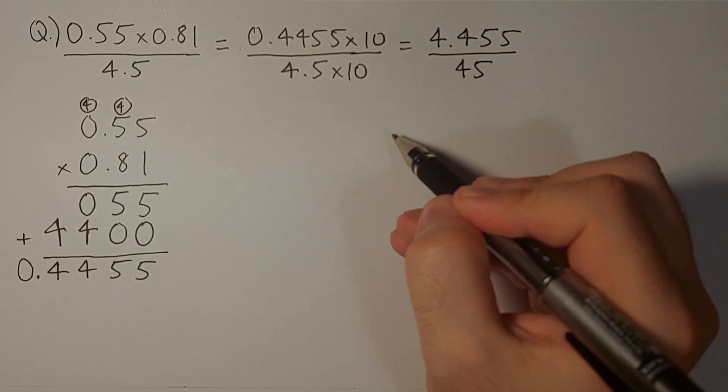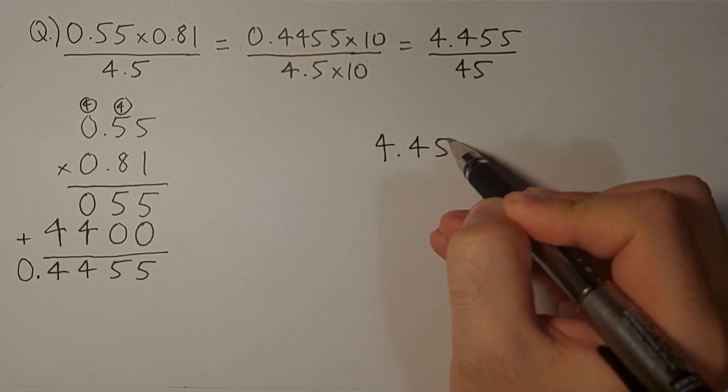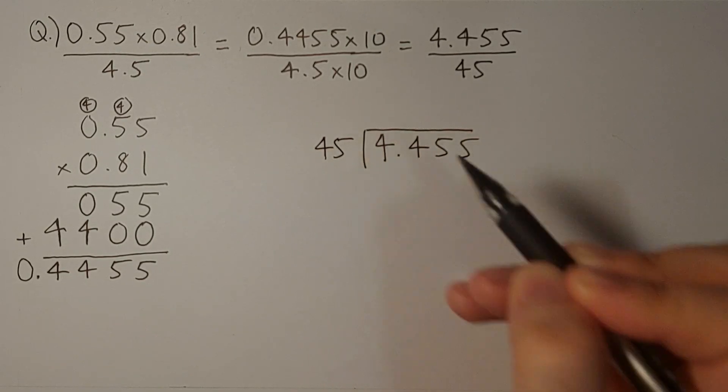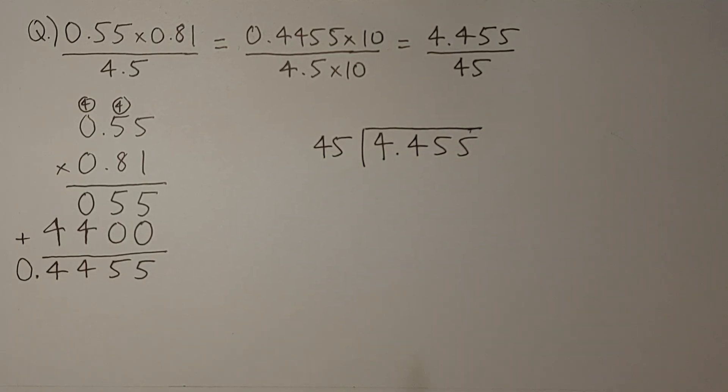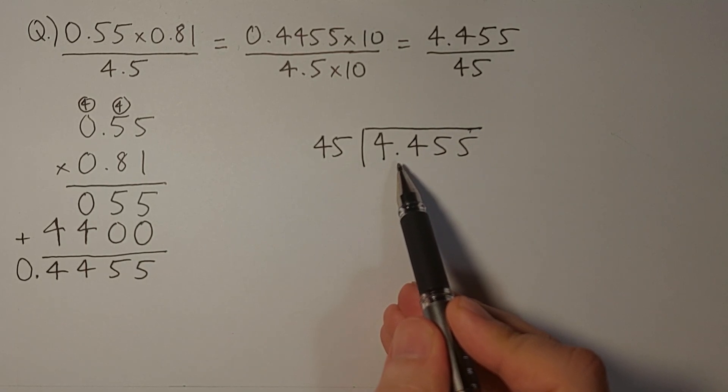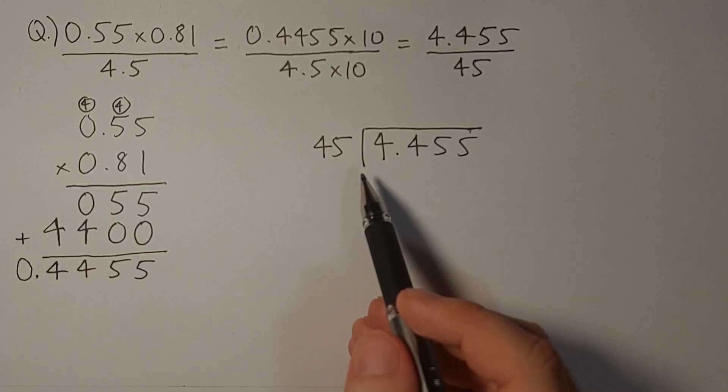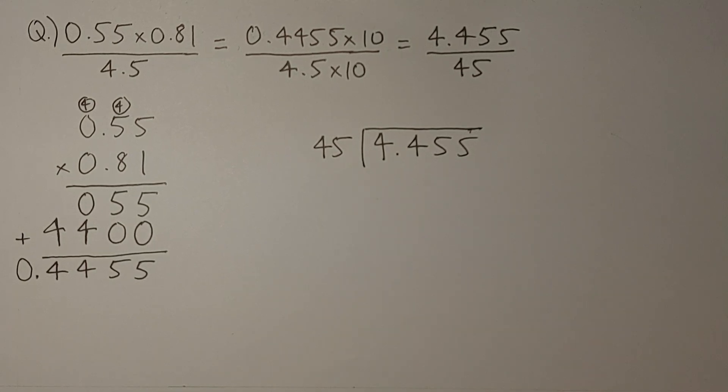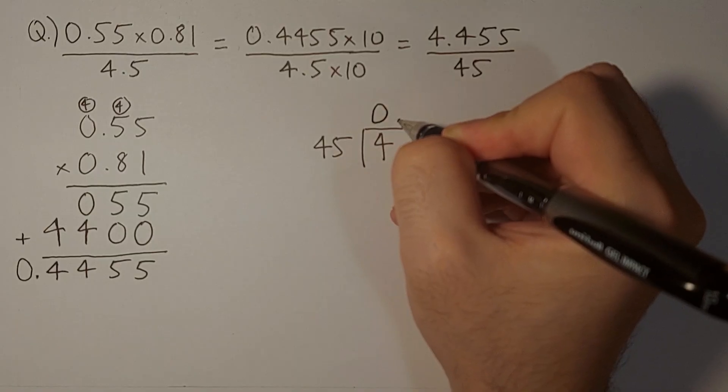So let's do this division now. 4.455 divided by 45. In 4.455, the whole number part, which is all the numbers to the left of the decimal point, there is only one number in this case: 4. This 4 is less than 45, so we write 0 and then we add a decimal.